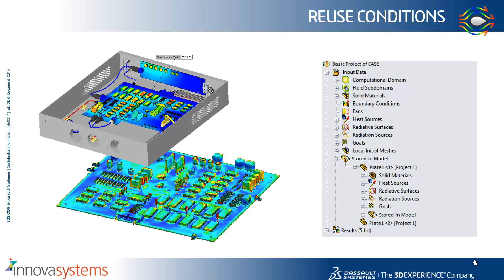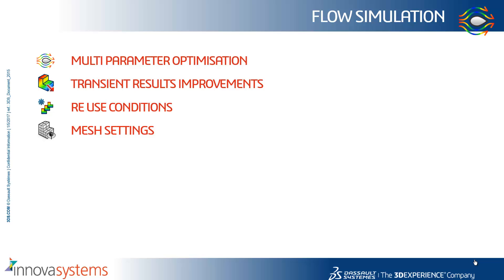The next enhancement is using flow conditions from a lower-level component in a higher-level assembly. Imagine we run a flow study on a PCB — we may then want to take that PCB and run a flow study on it when it goes into its enclosure. In previous releases we'd have had to set up all the flow conditions generated inside the original study in the top-level assembly. Now with 2017, we can just choose to reuse those conditions directly in the higher-level assembly. All you need to do is choose the option to import from model, and that will bring in your flow conditions. The conditions by default will be linked, but it is possible to break that link.